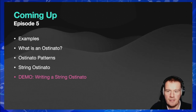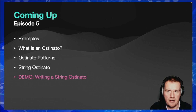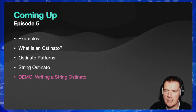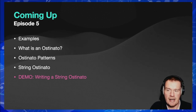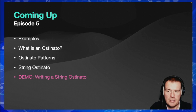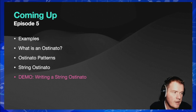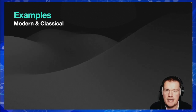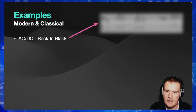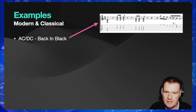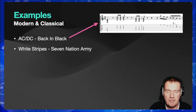So let's see what we're doing today. This week we're going to stick with one theme for the whole episode: string ostinatos. We'll have a few examples you can listen to, a quick explanation of what an ostinato actually is, a look at some patterns, and then a demo writing a string ostinato in Logic. Examples include AC/DC's 'Back in Black' — a classic guitar riff which is an ostinato — and 'Seven Nation Army' by The White Stripes.